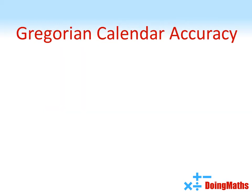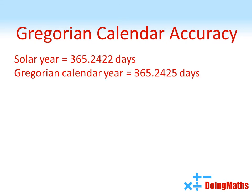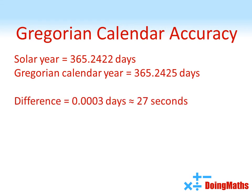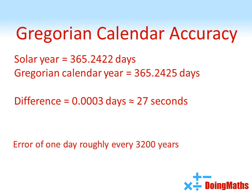The Gregorian calendar creates a calendar year of 365.2425 days, closer still to the actual length of the year. This time, we only have a difference of approximately 27 seconds per year, which equates to an error of one day roughly every 3,200 years.